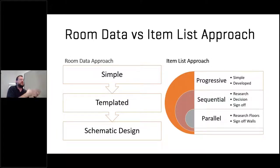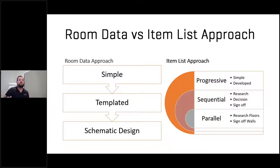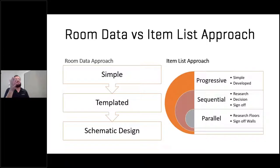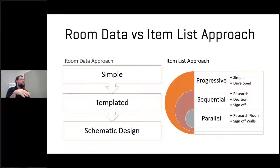Items are things you might want to quantify — a table, a chair, a light fixture — things that need an actual quantity and may need to be procured. The item approach gives you a lot more capability, allowing you to go beyond a simple room requirement. It supports sequential design phases — schematic design, design development, CDs — as well as parallel workflows where multiple floors are being designed simultaneously.